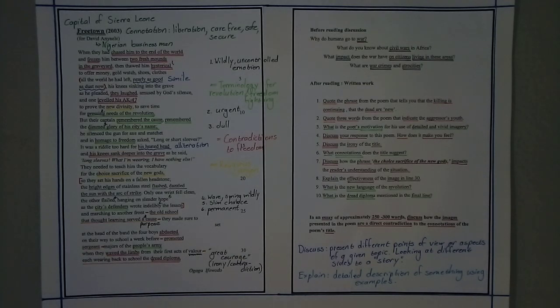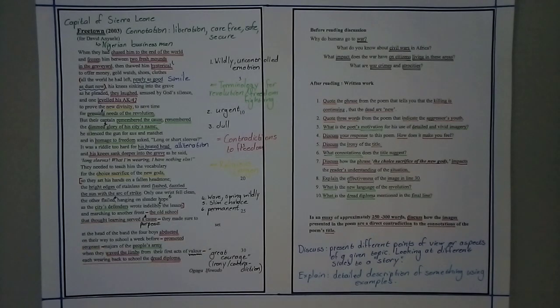They needed to teach him, for axe and machete, so they set his hands on a fallen headstone. The bright edges of stainless steel flashed, dazzled the sun with the arc of strike. Only one wrist fell clean, the other flailed, hanging on slender hope. As the city's defenders wrote indelibly the lesson, and marching on to another front, the old school that thought learning served a cause, they made sure to set at the head of the band, the four boys abducted on their way to school a week before. Promoted sergeant, majors of the people's army, when they waved the limbs from their first acts of valour, each wearing back to school the dread diploma.